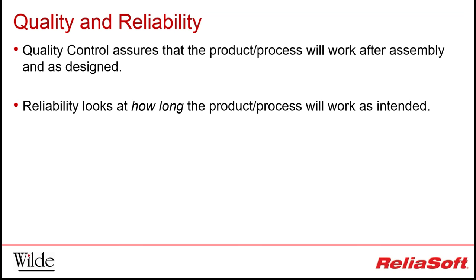Although similar, it's worth mentioning that there are some subtle differences between quality and reliability, mostly in the way they differ in the point in time at which they apply. Whereas quality assures that a product or process will work after assembly and as designed, reliability looks at how long the product or process will work as intended.